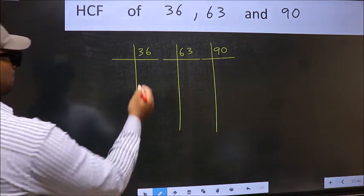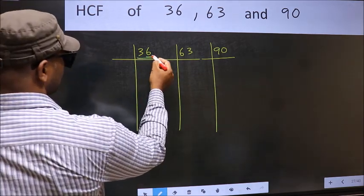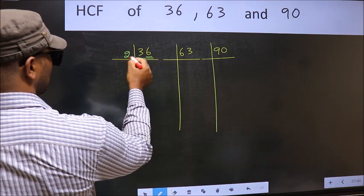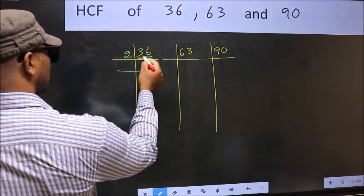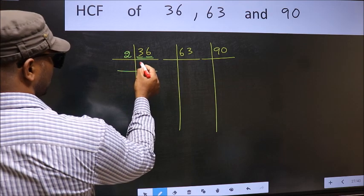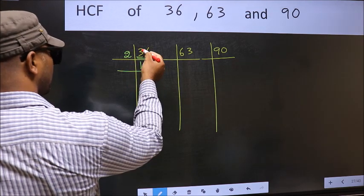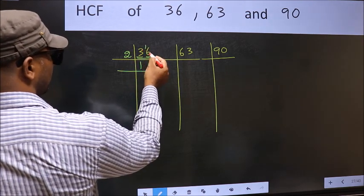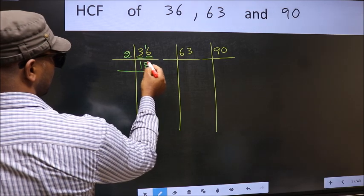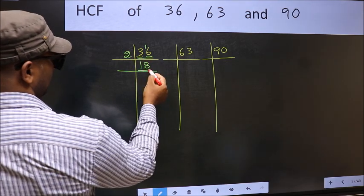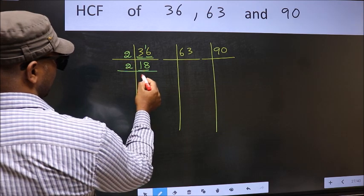Next, in this number, last digit 6, even, so take 2. First number 3, a number close to 3 in 2 table is 2, giving us 1, then 2. 3 minus 2 is 1, carried forward 16. When do we get 16 in 2 table? 2 times 8 is 16. Now 18 is 2 nines, 18.